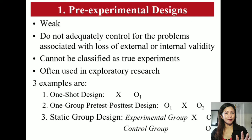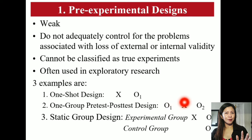Pre-experimental designs are weak compared with other types of experimental designs and are more often used in exploratory researches. Three examples are: the one-shot design, involving a treatment (X) and one measurement (O₁); the one-group pre-test post-test design, involving a treatment, a pre-test, and a post-test with one group of subjects; and the static group design, involving a treatment and a post-test from two groups — an experimental group and a control group.